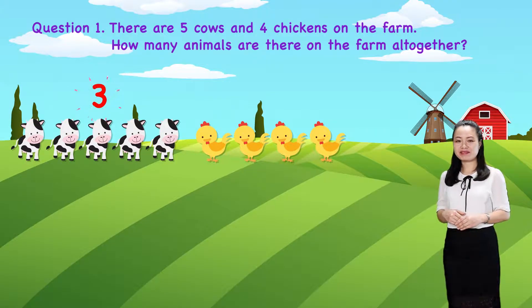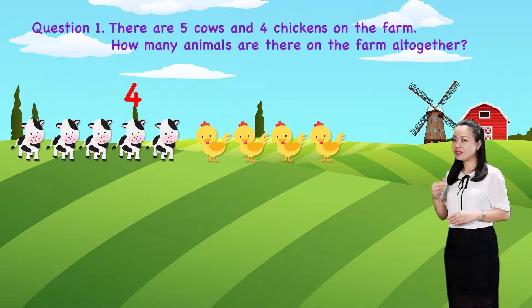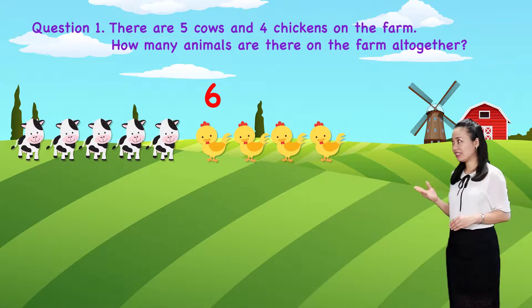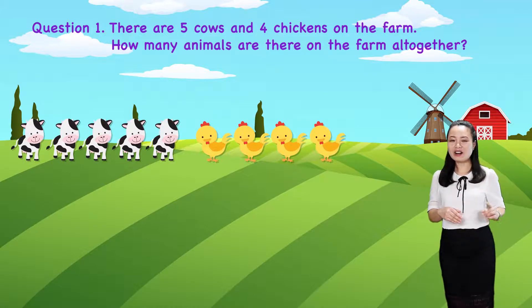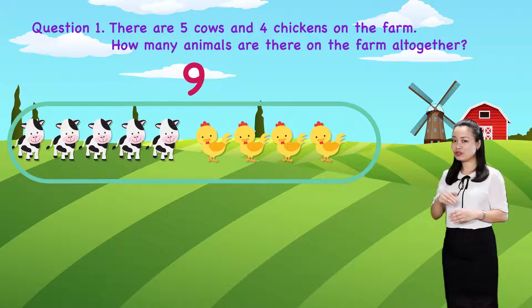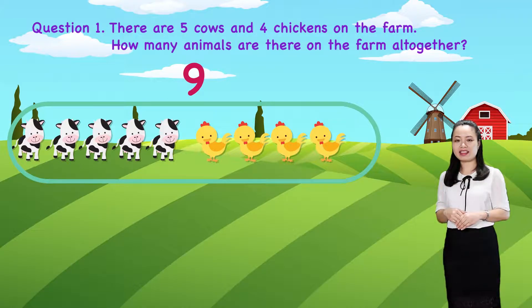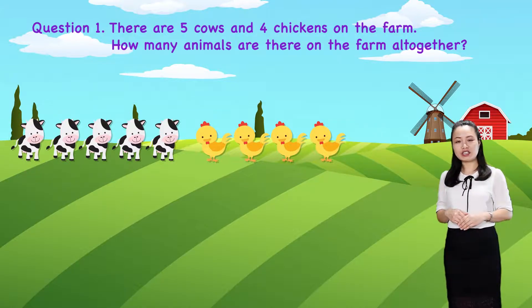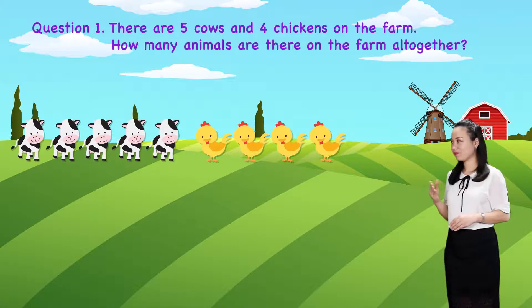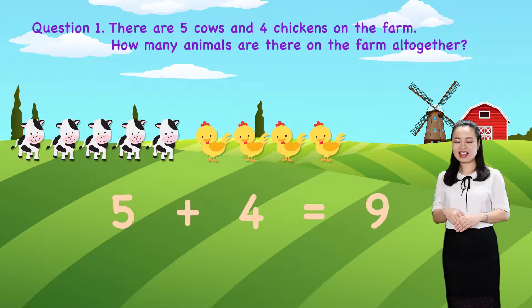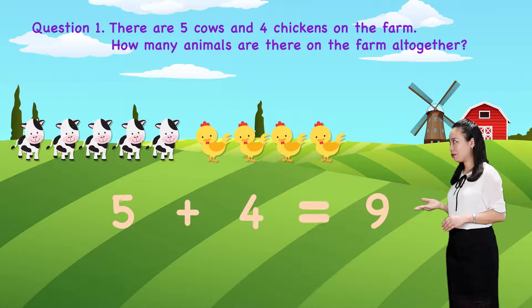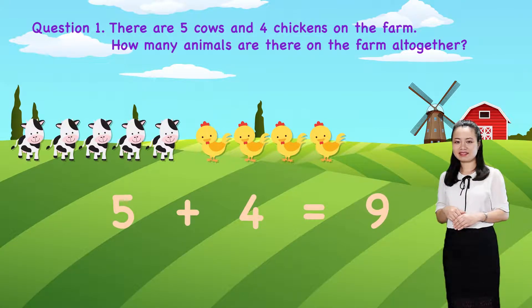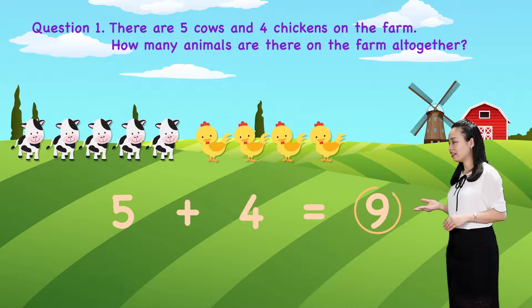1, 2, 3, 4, 5, 6, 7, 8, 9. So, there are 9 animals on the farm all together. We write in numerals. We say, 5 plus 4 equals 9. Here, 9 is the sum.